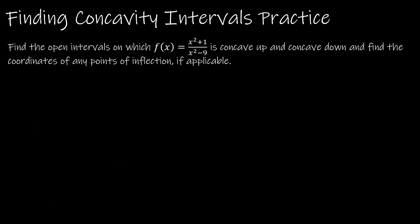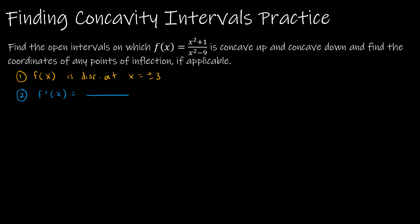Hold on — this next example is going to be a tough one. The first thing we need to understand is that this is a rational function, and rational functions often have values not included in the domain. So f of x is discontinuous at x equals plus or minus 3, because at those points the denominator would be zero. This one takes a while because of the math involved in finding the first and second derivative. Finding f prime of x requires the quotient rule: bottom times the derivative of the top, minus the top times the derivative of the bottom, over the denominator squared.